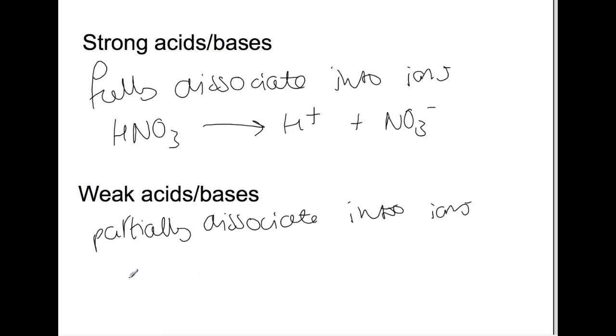An example would be vinegar or ethanoic acid. This is where we need to use the double-headed arrow, as this is a reversible reaction and this splits up partly into H+ and ethanoate ions. So most of the acid stays joined together like this, and only a small amount of molecules split up into H+ and CH3COO- ions.